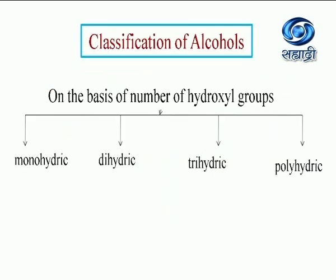So let us first start with alcohols. Alcohols are hydroxyl derivatives of alkanes. Depending upon the number of hydroxyl groups present, they are classified. If the alcohol contains only one OH group, we call it monohydric. If it contains two OH groups, we call it dihydric. If they contain three OH groups, we call it trihydric, and if they contain more than three, we call it polyhydric. This is the first question asked in board exams: what are alcohols and how are they classified?